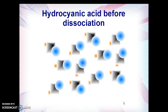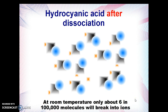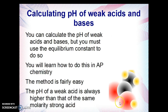Let's look at hydrocyanic acid when you put it into water before and after dissociation. This molecule can break up into a hydrogen ion and a cyanide ion, but that is not very common. At room temperature only about six in 100,000 molecules of HCN will break up into ions. That makes it a weak electrolyte and in this case a weak acid. You can calculate the pH of weak acids and bases, but you must use the equilibrium constant to do so — something you'll learn in AP chemistry.